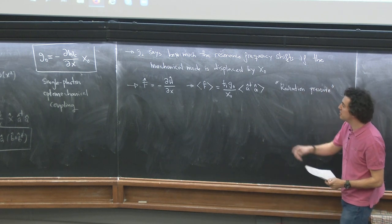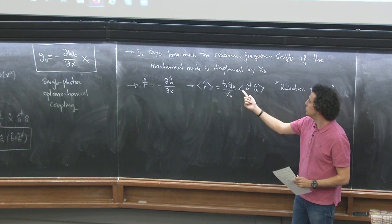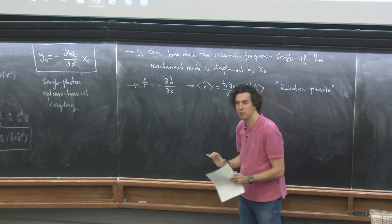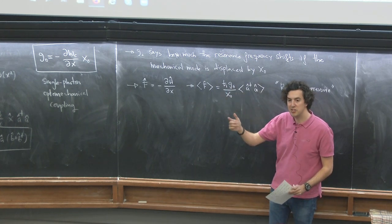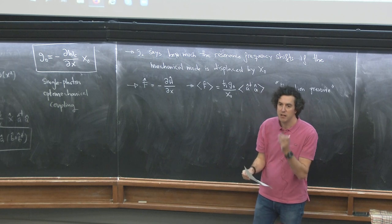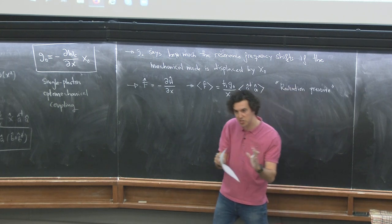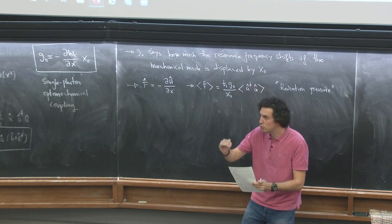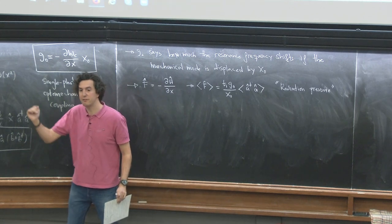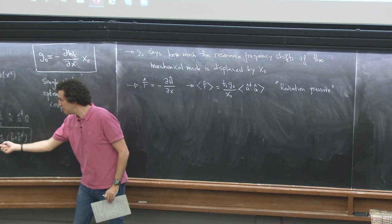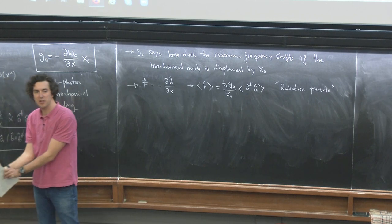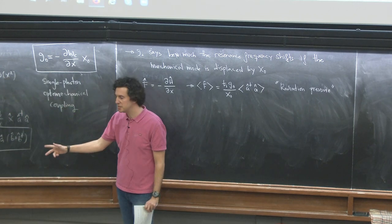From this Hamiltonian, if you have one photon in the cavity, g₀/x₀ is the force that photon exerts on the mechanical mode. If g₀ were larger, a single photon would exert more force on the object, moving it away from equilibrium — namely, exciting phonons. That's why the terms B and B† can create phonons, and the rate at which they do so depends on A†A. The more photons you have in the cavity, the more displacement you generate.